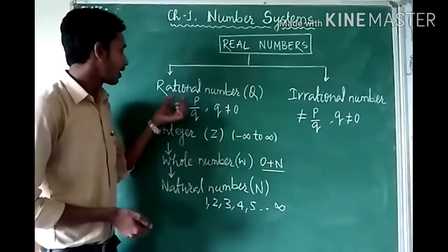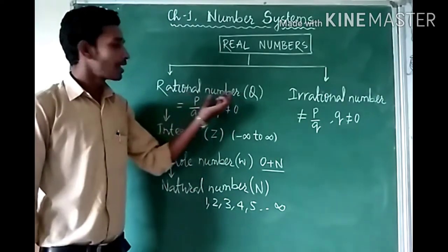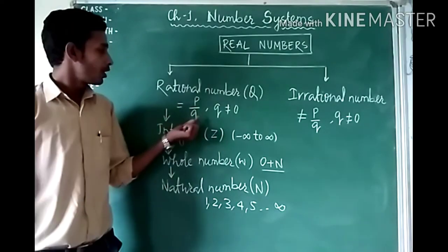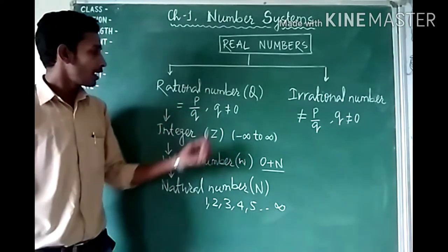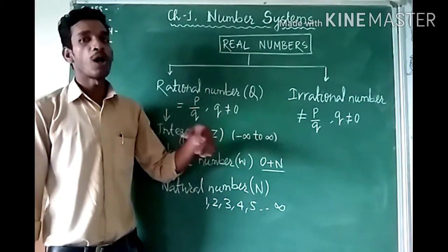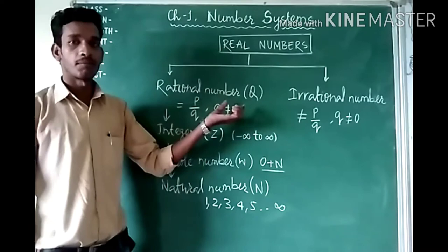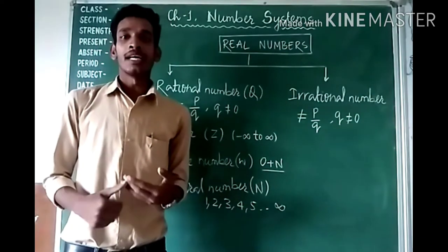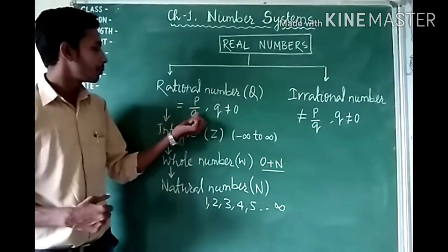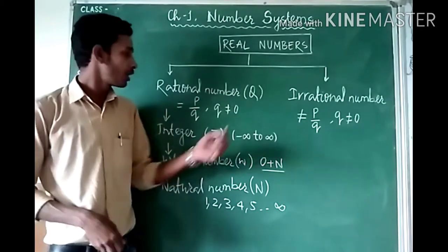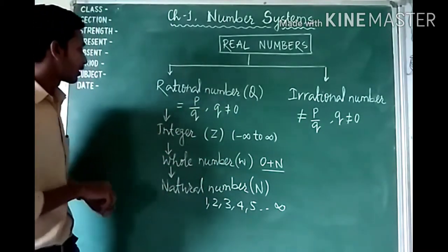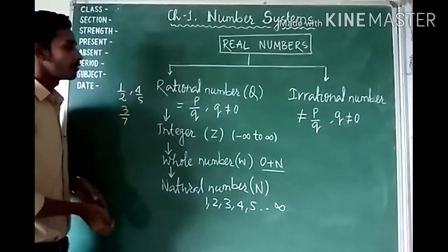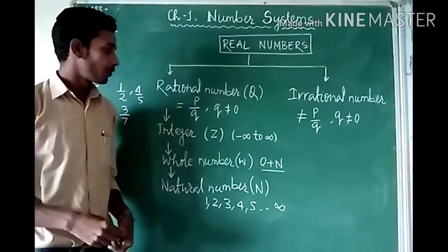Next, we will discuss rational numbers, which we studied in Class 8. Any number in the form of P by Q, where P and Q are integers and Q is not equal to 0, is called a rational number. For example, 1/2, 4/5, and 3/7 — all these numbers are rational numbers.